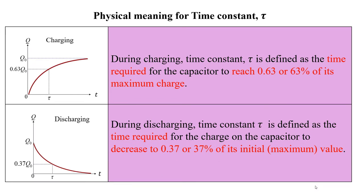During charging, time constant tau is defined as the time required for the capacitor to reach 0.63 or 63% of its maximum charge.